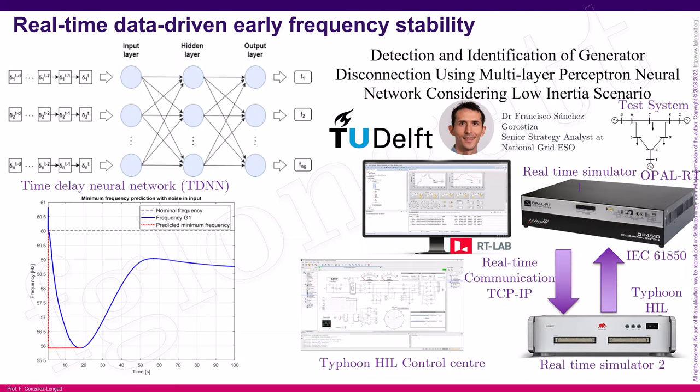Another thing we have been doing is data-driven methods for early frequency instability detection. We have been using time-delayed neural networks to identify when a synchronous machine is disconnected inside the electrical power system. We have again used real-time simulators to demonstrate our solution, using IEC 61850 as the communication protocol between Typhoon HIL and the Opal RT simulator.